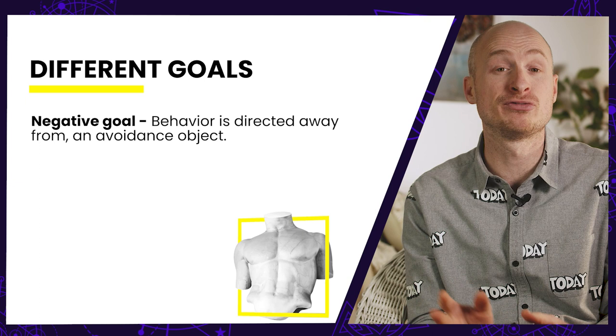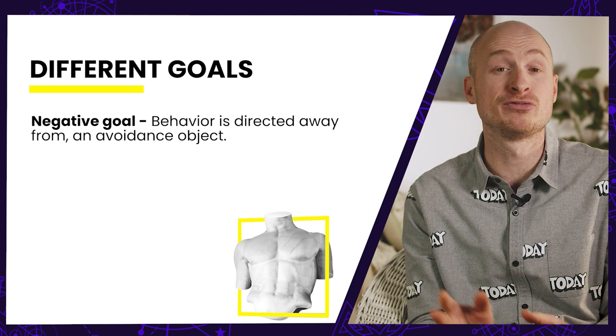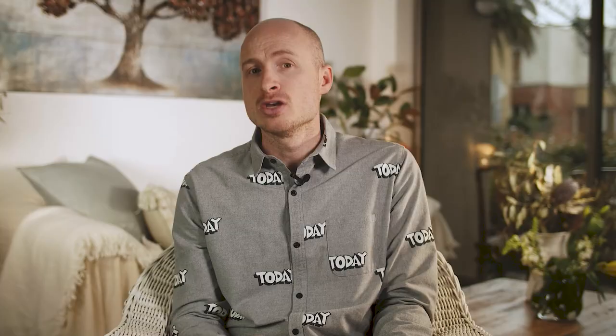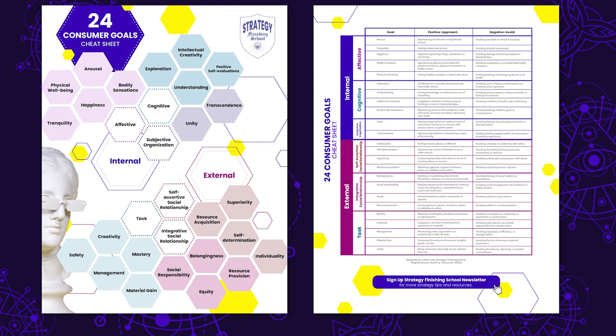Psychologists have suggested that goals can be both positive and negative because they both drive us to action. A negative goal is one from which behavior is directed away from, referred to as an avoidance object. A positive goal is one towards which behavior is directed, referred to as an approach object. There is usually an avoidance goal for every approach goal. For example, people may play Call of Duty to experience excitement — that's an approach goal. They may also want to avoid being bored — that's the avoidance goal. The same arousal goal is being activated in both statements. The approach and avoidance goals are visible in the free 24 goals cheat sheet in the description.